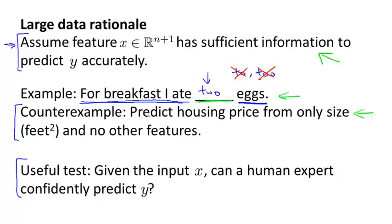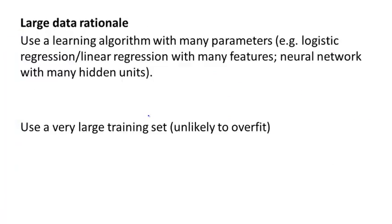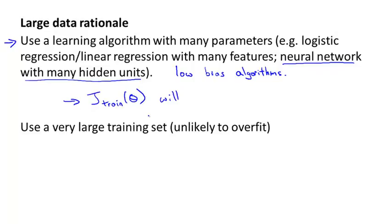So let's say this assumption holds. Let's see then when having a lot of data could help. Suppose the features have enough information to predict the value of y, and let's suppose we use a learning algorithm with a large number of parameters. So maybe logistic regression or linear regression with a large number of features. Or one thing that I sometimes do, one thing that I often do actually, is use a neural network with many hidden units. That would be another learning algorithm with a lot of parameters. So these are all powerful learning algorithms with a lot of parameters that can fit very complex functions. So I'm going to call these, we're going to think of these as low bias algorithms, because they can fit very complex functions. And because we have a very powerful learning algorithm that can fit very complex functions, chances are, if we run these algorithms on the data set, it will be able to fit the training set well. And so hopefully, the training error will be small.